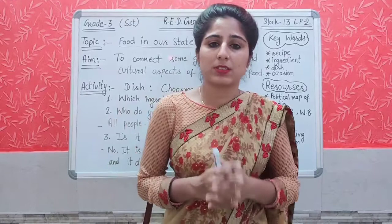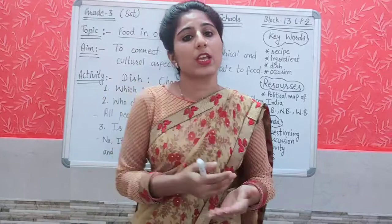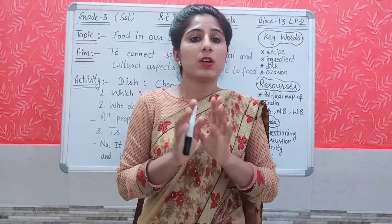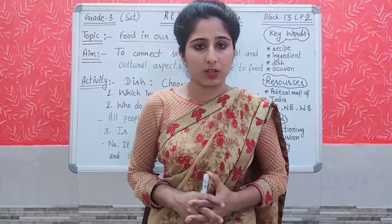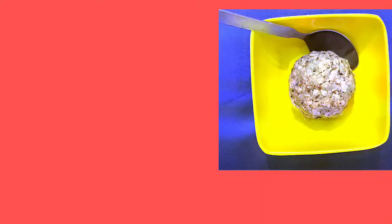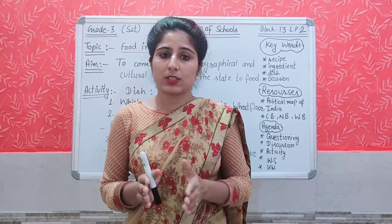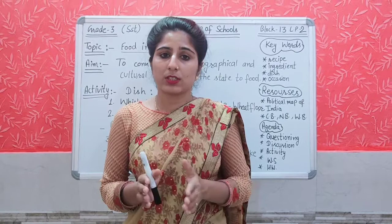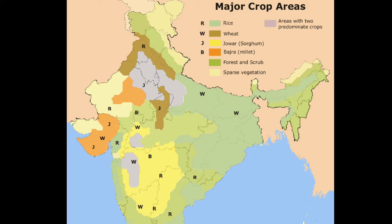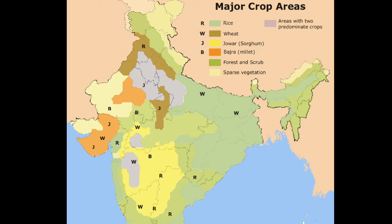Today we are going to discuss about Churma and see what one particular dish can tell us about our state. Have a look at this picture of Churma — some ingredients are also written on it. Read it very carefully. Now also have a look at this map of India, where the crops grown on large scale in India are indicated by colour, with names mentioned on the scale.